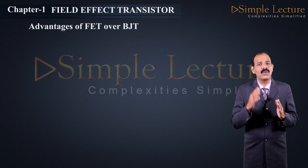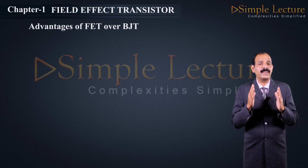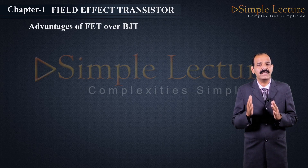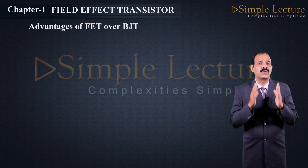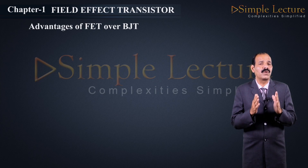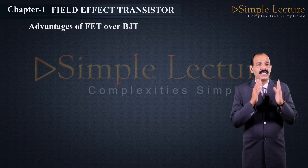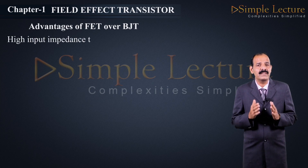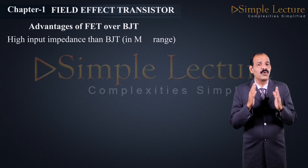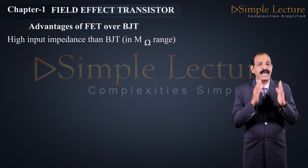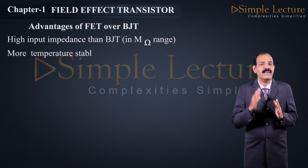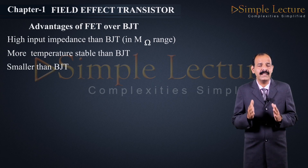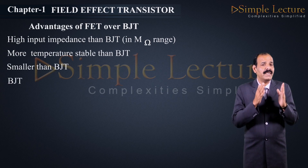Advantages of FET over BJT: In the case of BJT, the total current is due to both majority and minority charge carriers. But in the case of FET, the total current is due to only majority charge carriers. Therefore, FET offers very high input impedance compared to BJT, almost in the mega-ohm range, and is more temperature stable and physically smaller than BJT.